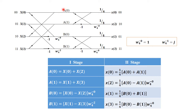The first stage outputs are A(0), A(1), B(0), and B(1). The second and final stage outputs are X(0), X(2), X(1), X(3) — meaning the output is not in sequence. For A(0), we take X(0) directly and add the input from X(2). Therefore A(0) = X(0) + X(2).